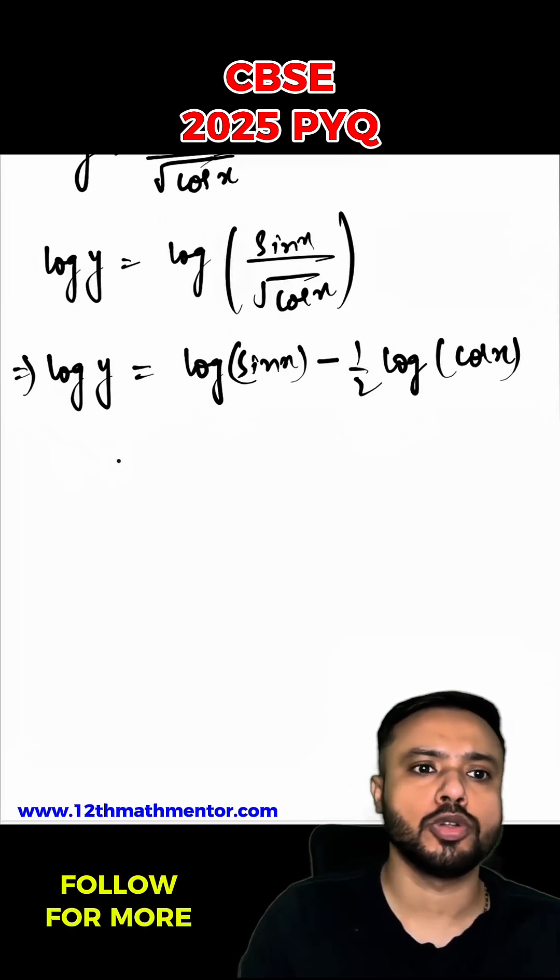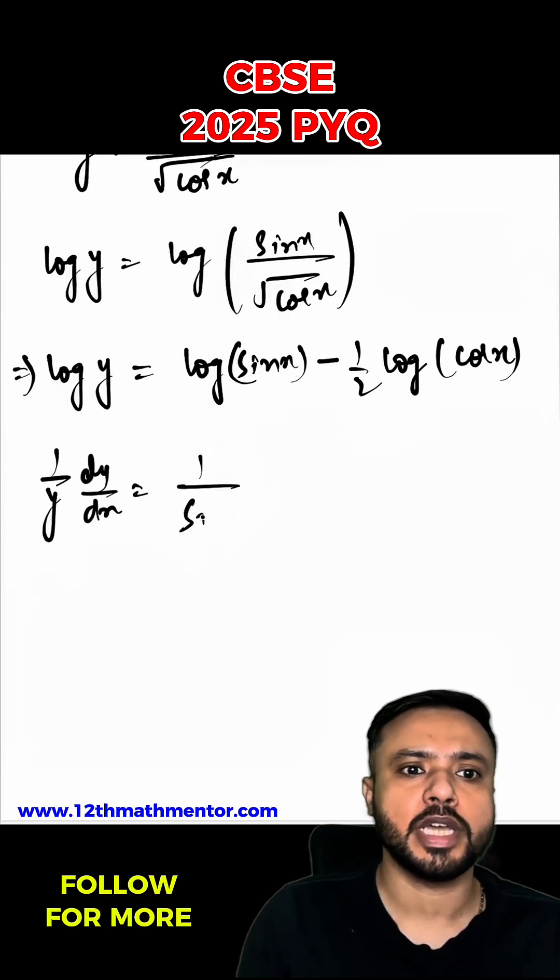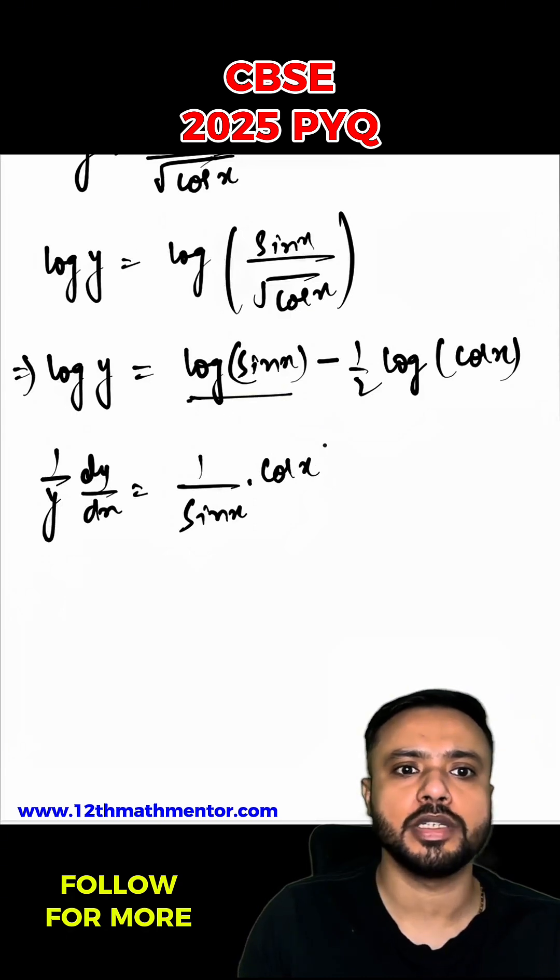And now I'm going to differentiate both sides with respect to x. So it would be 1 upon y dy upon dx equals to 1 upon sin x into cos x. So basically I'm using chain rule to differentiate this. Minus 1 by 2 into 1 by cos x into negative sin x.